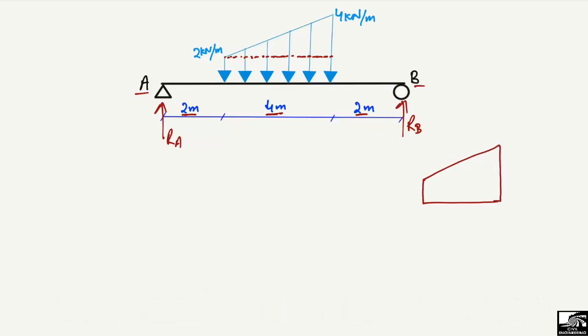The magnitude at the left is 2 kN/m and at the right is 4 kN/m, and this distance is 4 meters. We divide and split this load into two categories — category one (rectangle) and category two (triangle) — and first we find out their equivalent loads.